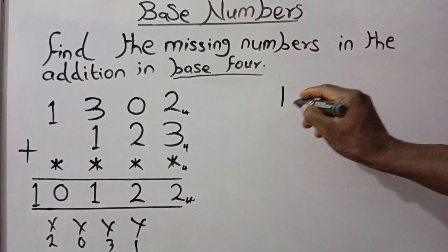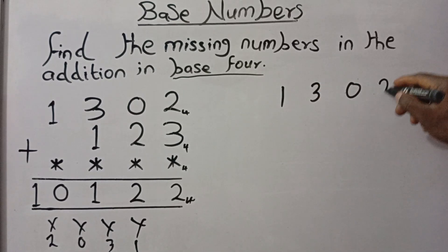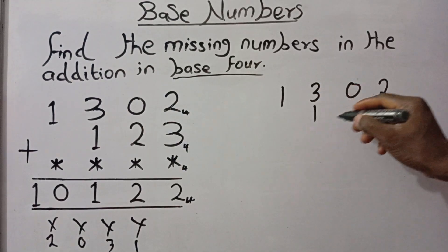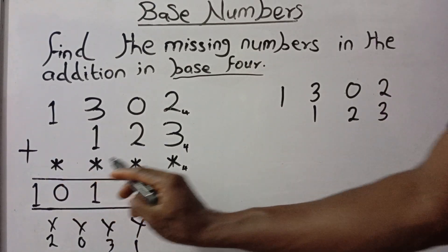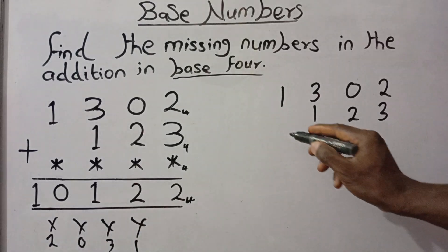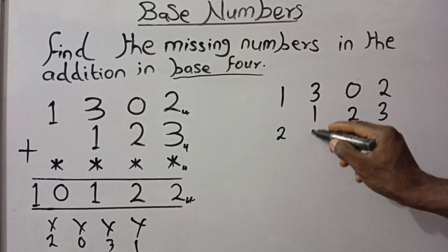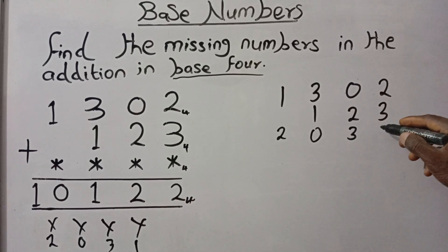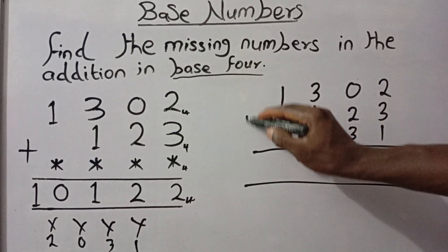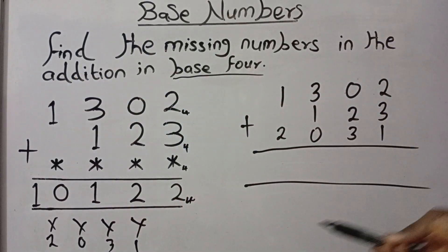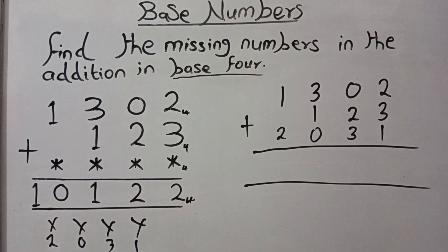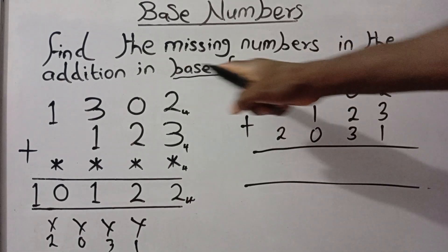To check, we now have 1302 plus 123, all in base 4, plus the digits we found — which are 2031. Let's add all of them together. We have now found the missing one, so let's add them all to see whether we get the same overall answer. Remember we are working in base 4, so if we don't get the same solution, something is wrong somewhere.